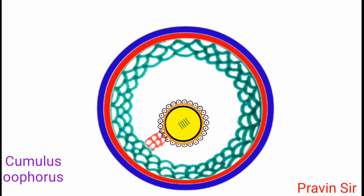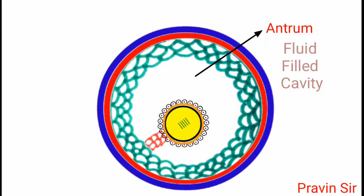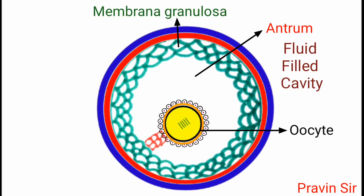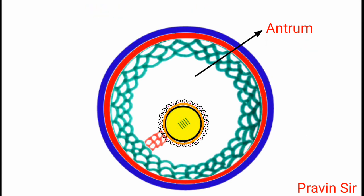Cumulus oophorus is a term used for the oocyte and surrounding granulosa cells. This is antrum. It is a fluid filled cavity which lies between the oocyte and membrana granulosa. It is filled with fluid called liquor folliculi.